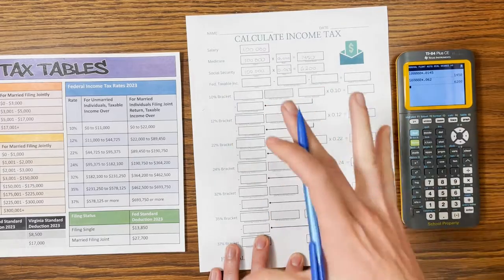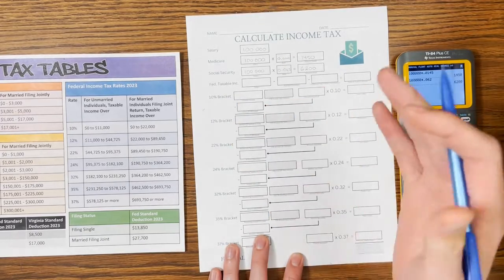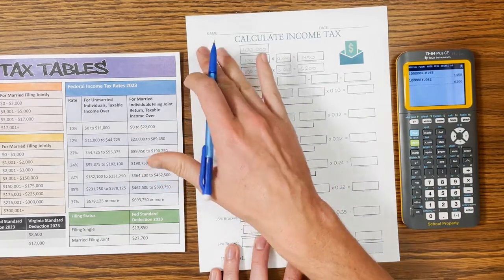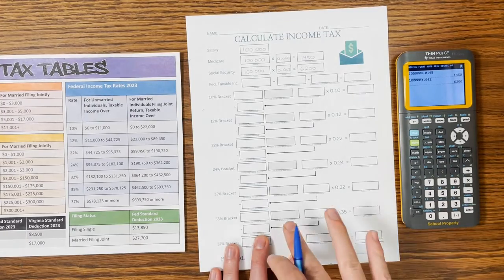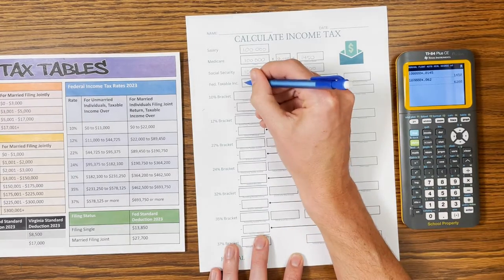Now the hard part about this, or the thing you have to remember, is that when you go to federal taxable income, your FICA taxes do not reduce your federal taxable income. You go back up to your salary once more.